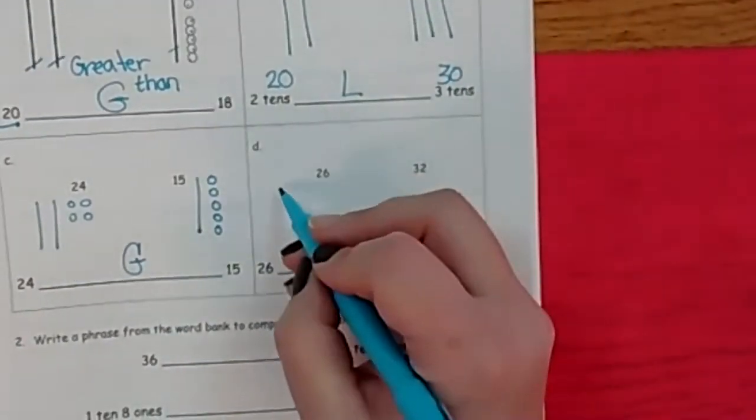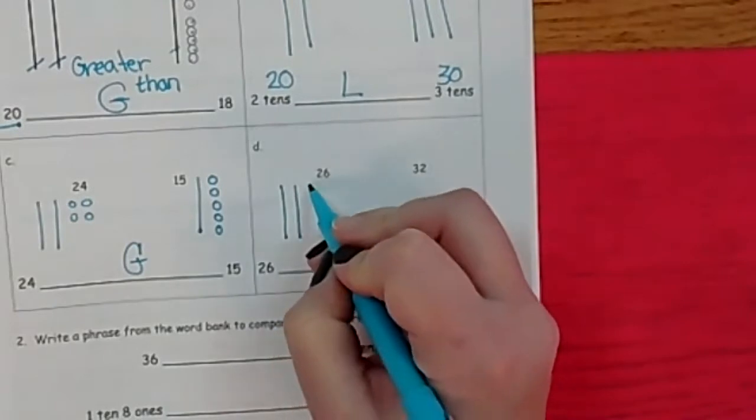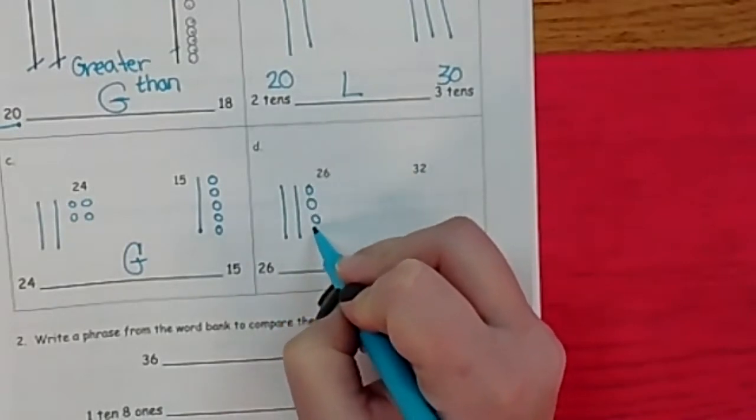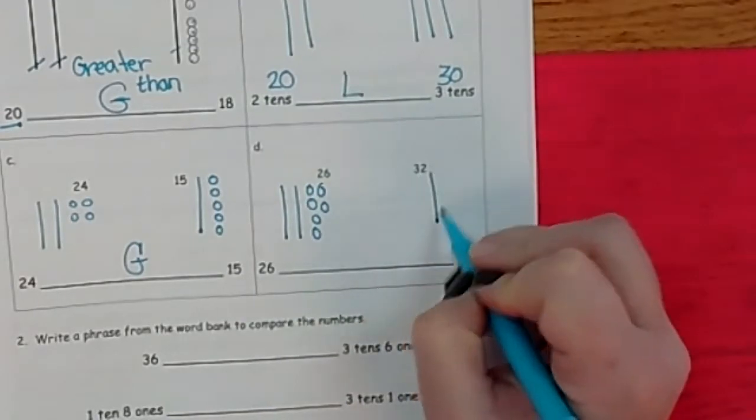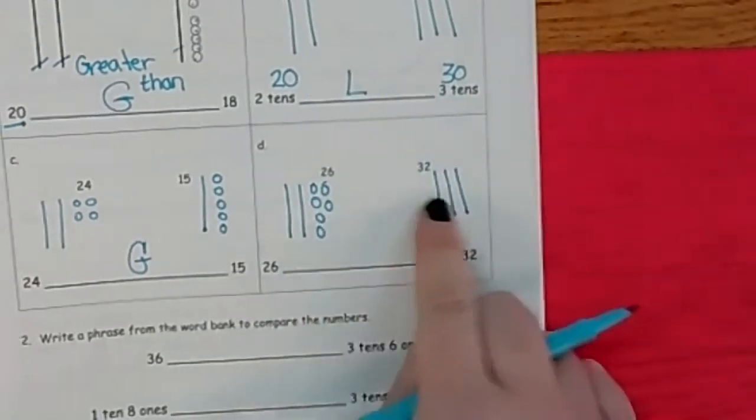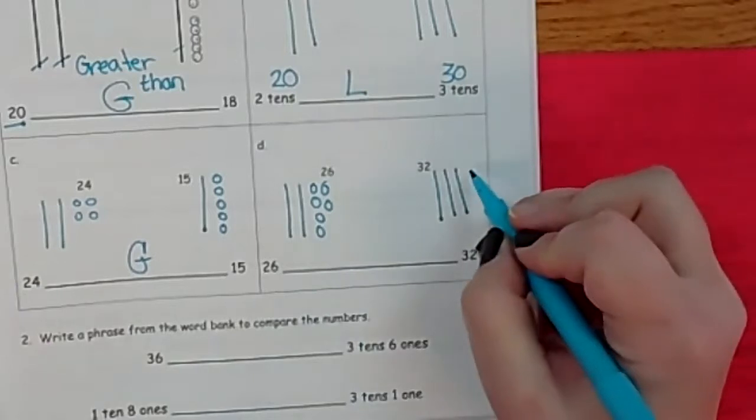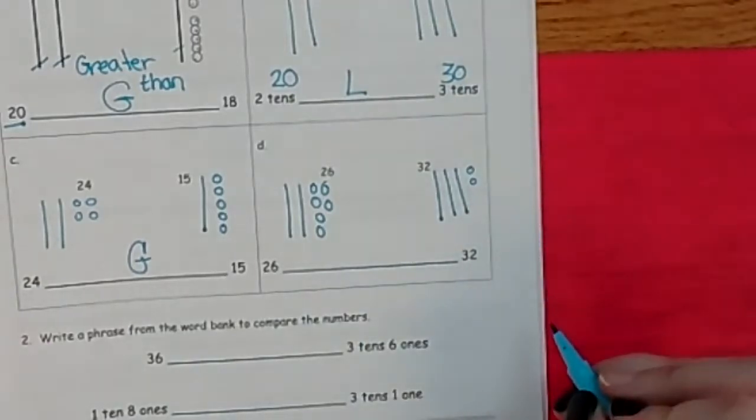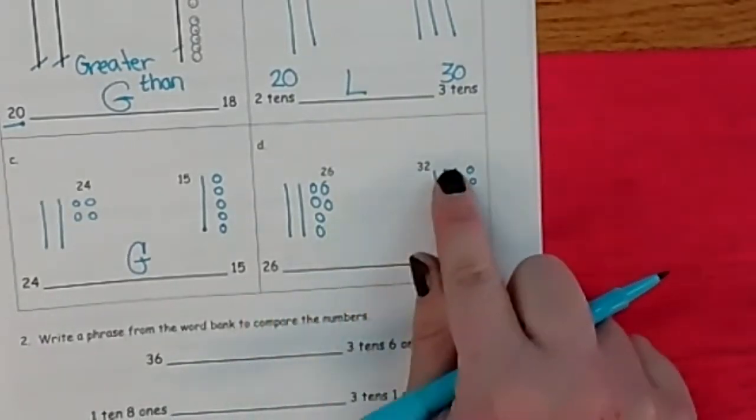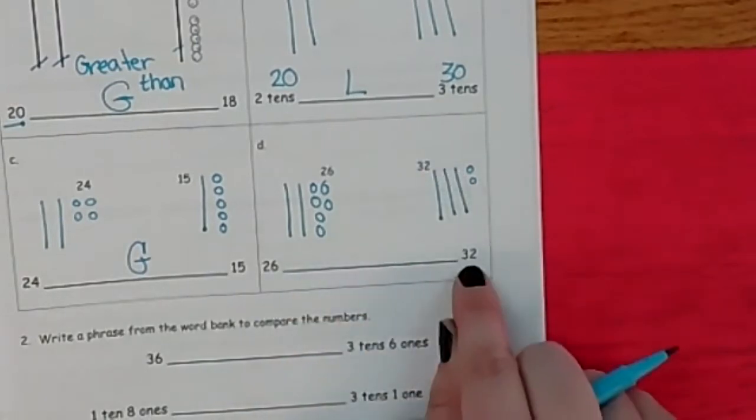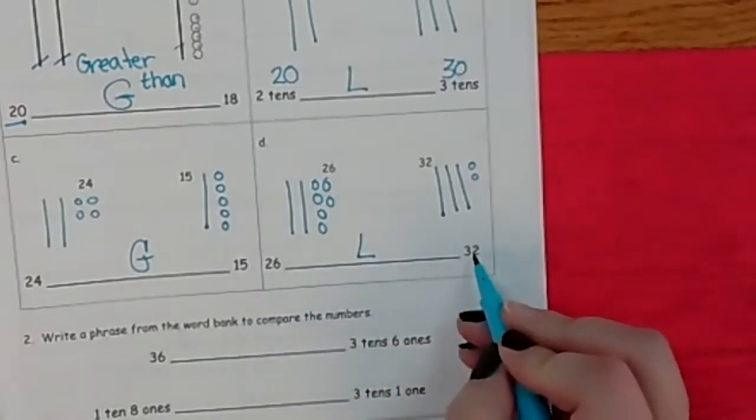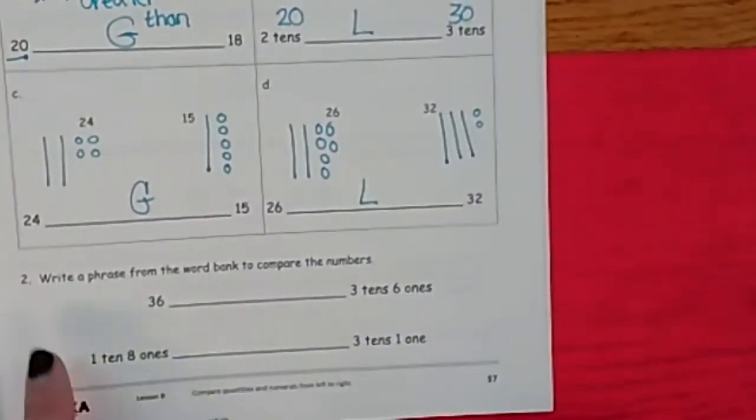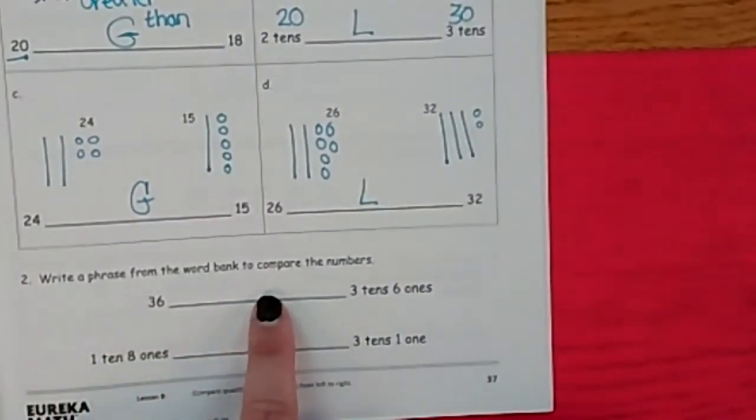Now we have to draw 26. 10, 20, 1, 22, 23, 24, 25, 26. Draw 32. 10, 20, 30. Look how I keep them separate so I don't get confused. 31, 32. 26 is blank 32. Yeah, that one's bigger. So 26 is less than 32.